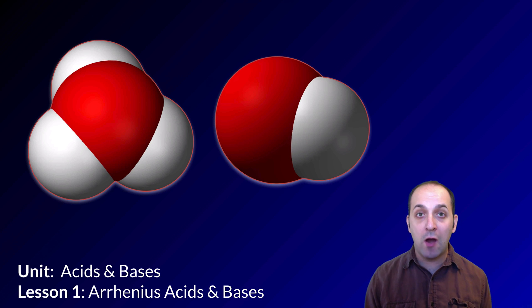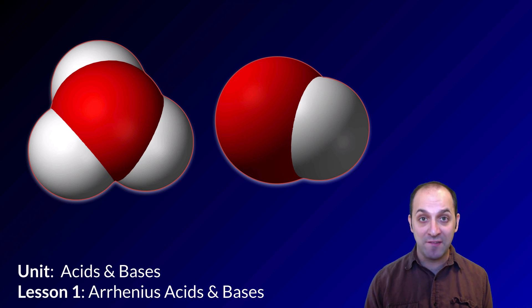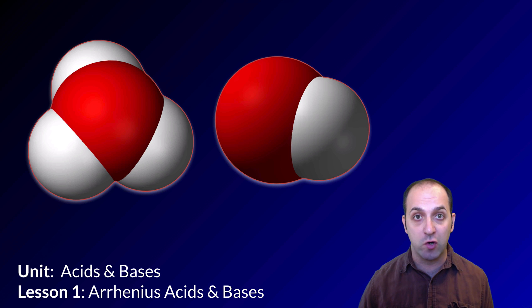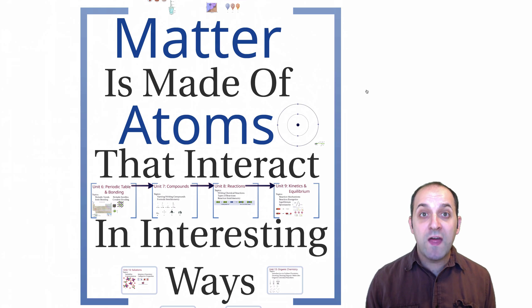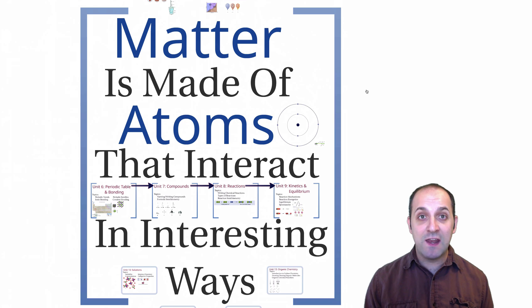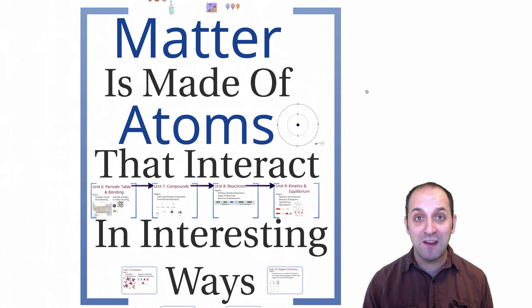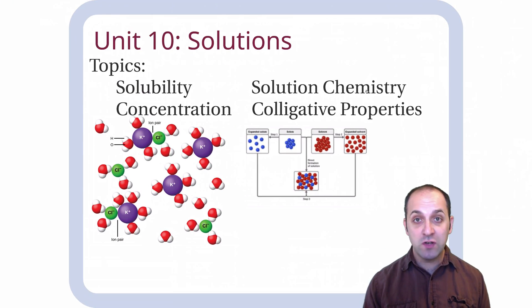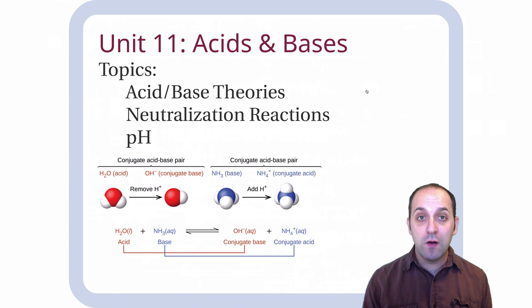Hi friends, and welcome to our acids and bases unit. Before we dig in, let's go out to the course organization presentation and see where we are in the overall structure of our year. Our overall theme for the year is that matter is made of atoms that interact in interesting ways. Here in the last part of our course, we're looking at four different specific cases of interesting chemistry. Unit 10 dealt with solutions, and now here in Unit 11, we're going to be looking at acids and bases.